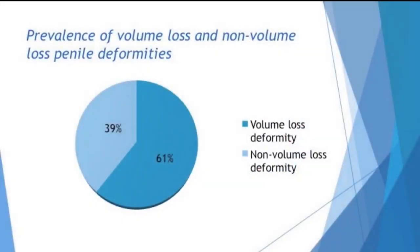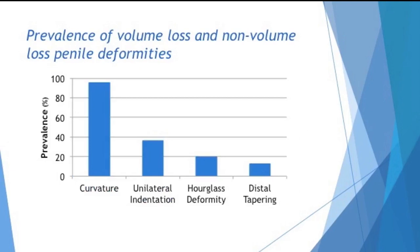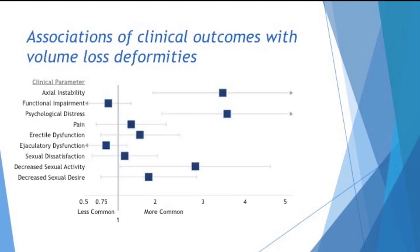The prevalence and clinical importance of penile volume loss deformities are significant. In a cohort of 155 patients with Peyronie's disease who presented to our institution, 61% had volume loss deformities found, including 37% with unilateral indentation, 20% with hourglass, and 13% with distal tapering. After controlling for angle of curvature, penile volume loss was associated with significantly higher rates of axial instability, psychological distress, and decreased sexual activity.